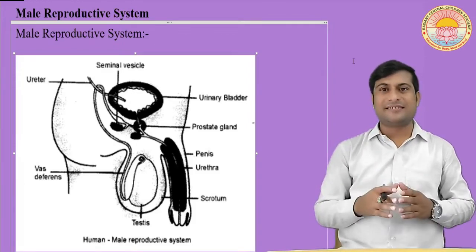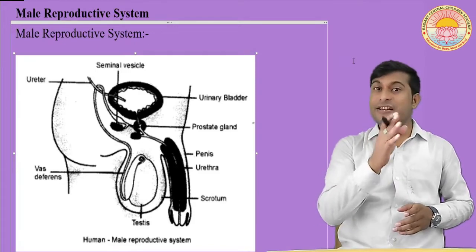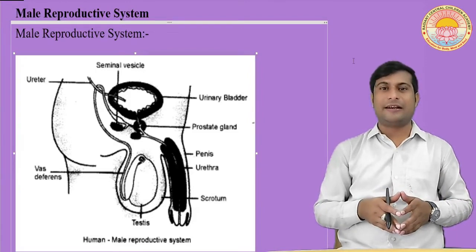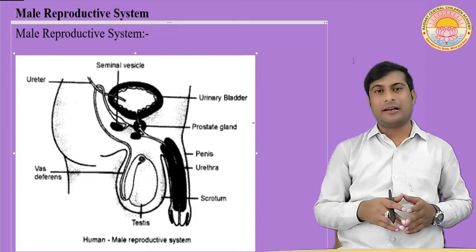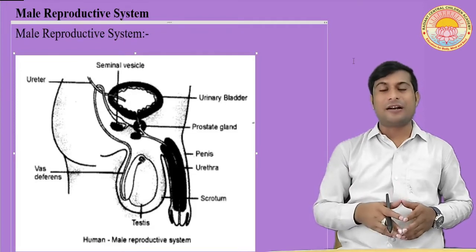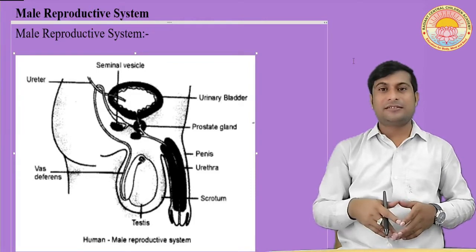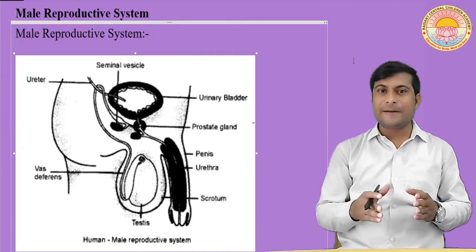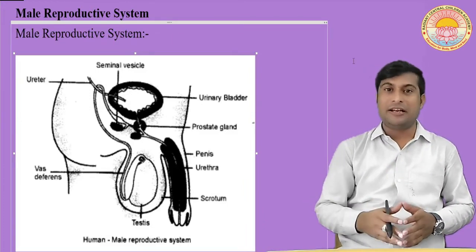These testes are situated outside the abdominal cavity in the scrotum. A very important question arises: why are the testes situated outside the abdominal cavity? The temperature required for the formation of the male gamete, that is sperm, is lower than the body temperature. This is why testes are situated outside the abdominal cavity.